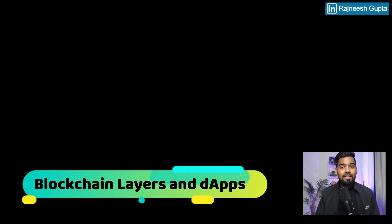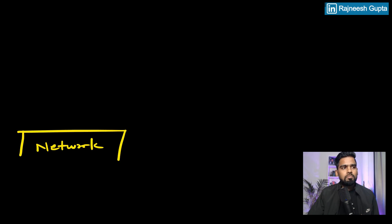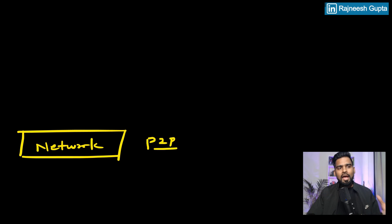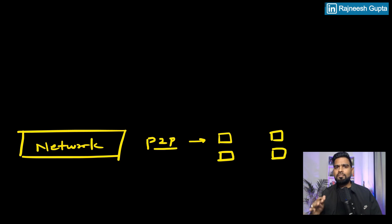We've heard enough about blockchain layers and dApps, so let's break it down and understand how exactly it works — practically as well. I'll make use of some diagrams to understand it. At the very bottom we have our network layer, which is basically our P2P network. In this P2P network we have nodes — all the nodes connected in a P2P model.